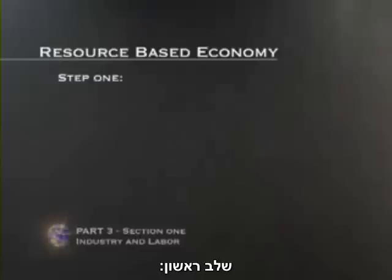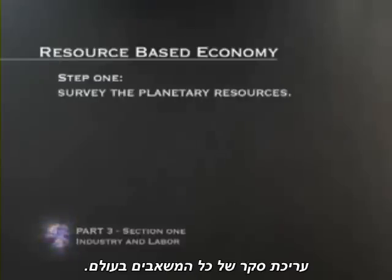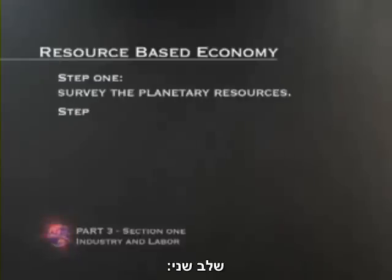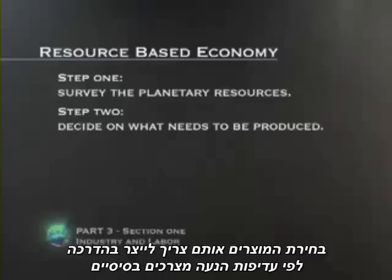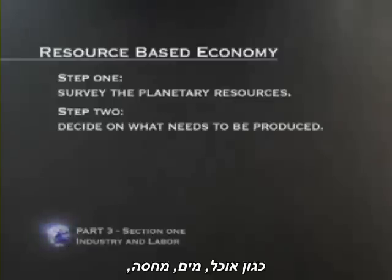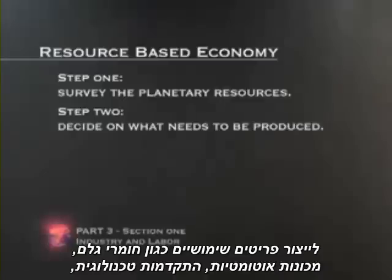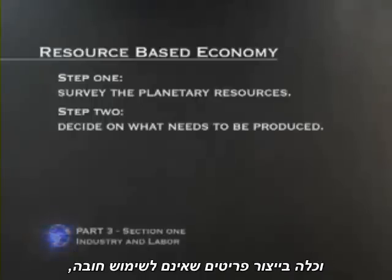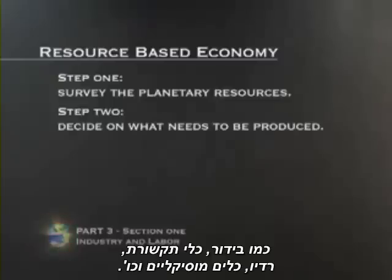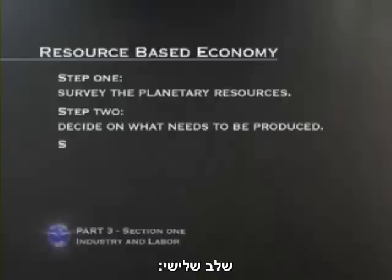Step 1: Survey the planetary resources. Step 2: Decide on what needs to be produced, oriented by a priority ranging from bare necessities such as food, water, shelter, to utility-based production items such as raw materials, automation machines, and technological development, to production items used for non-utility-based purposes such as entertainment, media, radios, musical instruments, etc.